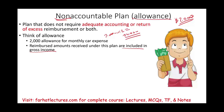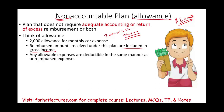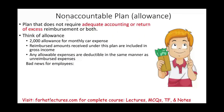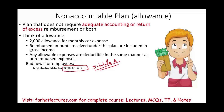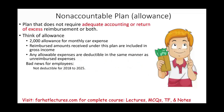Any allowable expenses are deductible in the same manner as unreimbursed expenses — the company can still deduct the $24,000 under the non-accountable plan. This is bad news for employees because you include the income but cannot deduct the expenses. As an employee, you only have Schedule A miscellaneous itemized deductions to deduct your business expenses, and from 2018 to 2025 those Schedule A deductions are suspended for miscellaneous expenses. Therefore, you end up including the income without being able to deduct the expenses — it's taxable but not deductible.